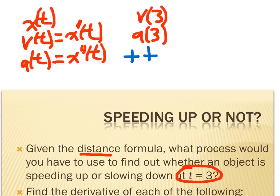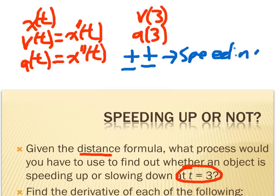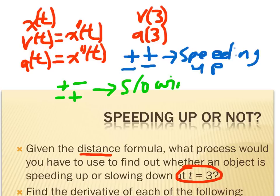If they both come out positive, or they both come out negative, that tells me the object is speeding up because the forces are working with one another. However, if when I plug in v(3) and a(3) the signs come out opposite, it means the forces are working against one another and the object would be slowing down. To summarize: same signs means forces are working together — speeding up. Different signs means forces are working against one another — slowing down.